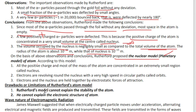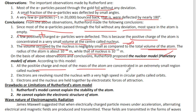According to this model, all the positive charge and most of the mass of the atom are concentrated in an extremely small region called the nucleus. Electrons revolve around the nucleus with very high speed in circular paths called orbits. The positive charge and most of the mass are concentrated in this small central region called the nucleus.